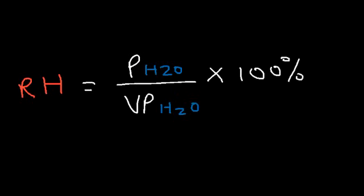The partial pressure of water gives you an idea of the amount of water that's in the air, whereas the vapor pressure is associated with the maximum amount of water that can be in the air at a given temperature.